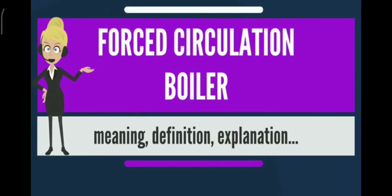A forced circulation boiler is a boiler where a pump is used to circulate water inside the boiler. This differs from a natural circulation boiler, which relies on current density to circulate water inside the boiler. In some forced circulation boilers, the water is circulated at 20 times the rate of evaporation.